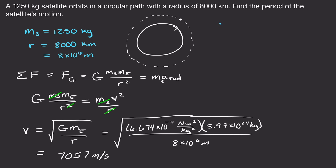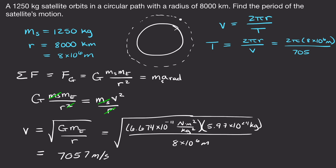Now that we know the orbital speed, the velocity of a circular path equals the circumference (2πR) divided by the period T. Solving for T: T equals 2πR divided by V. Plugging in 2π times 8 × 10⁶ meters divided by 7,057 m/s gives a period of 7,123 seconds — roughly 119 minutes, or about 2 hours for the satellite to orbit Earth.